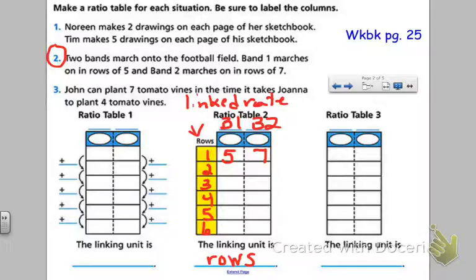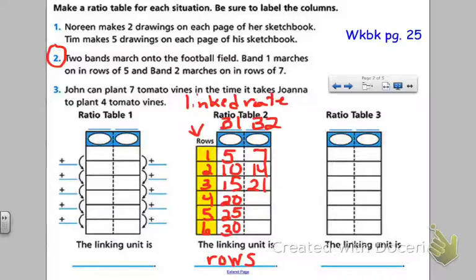When row two starts, we have another five people from band one, bringing it to ten, and another seven from band two, bringing it to fourteen. The third row comes along, and we're up to fifteen band one members and twenty-one band two members. Band one is increasing by fives every row, and band two is increasing by sevens every row. At the very top, I'm going to put the original ratio — the ratio of people from band one to band two — and that is five to seven. This is what we call the basic ratio.